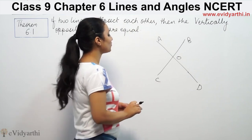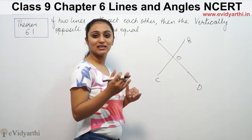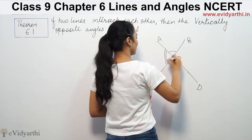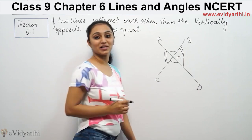These are two lines. We have to prove that if lines are intersecting, then vertically opposite angles are equal. That means this angle equals this and this angle equals this. We have to prove that.